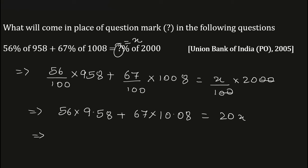Now 56 into 9.58 is equal to 536.48, plus 67 into 10.08 is equal to 675.36, is equal to 20x.